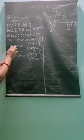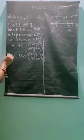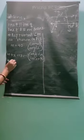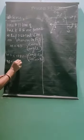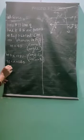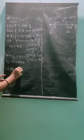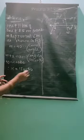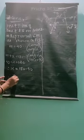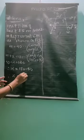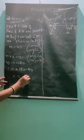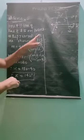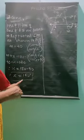Angle M is 40 degrees. Substituting, 40 plus X equals 180. Therefore X equals 180 minus 40, and hence the value of X is 140.